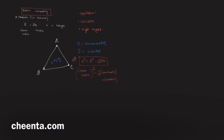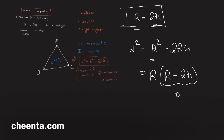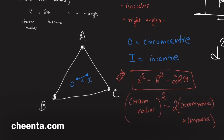Now let's apply this formula to our problem. Since R = 2r, we substitute into D² = R² − 2Rr = R(R − 2r). But since R = 2r, we get R − 2r = 0, so D² = 0, meaning D = 0. The distance between O and I is zero in this special triangle.